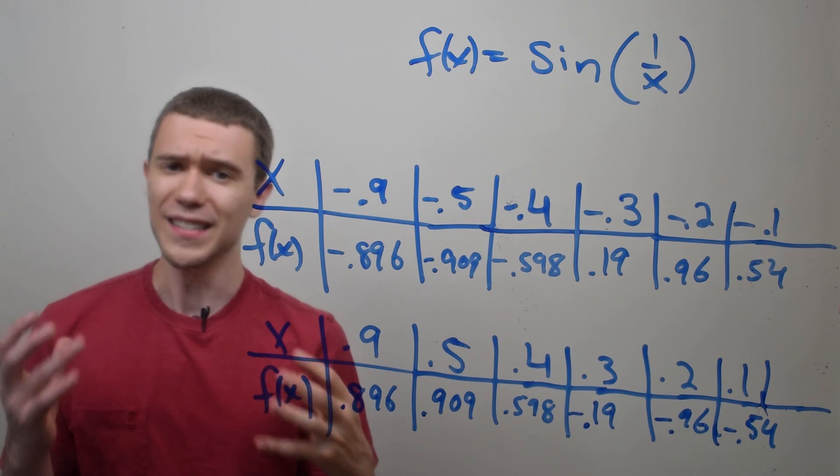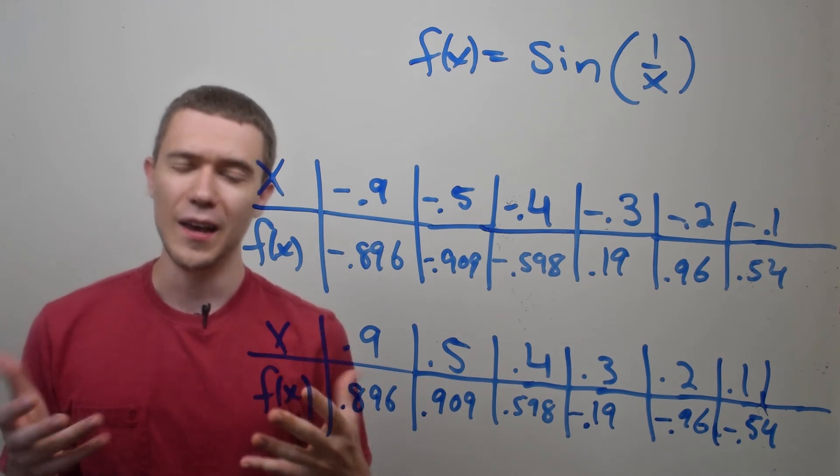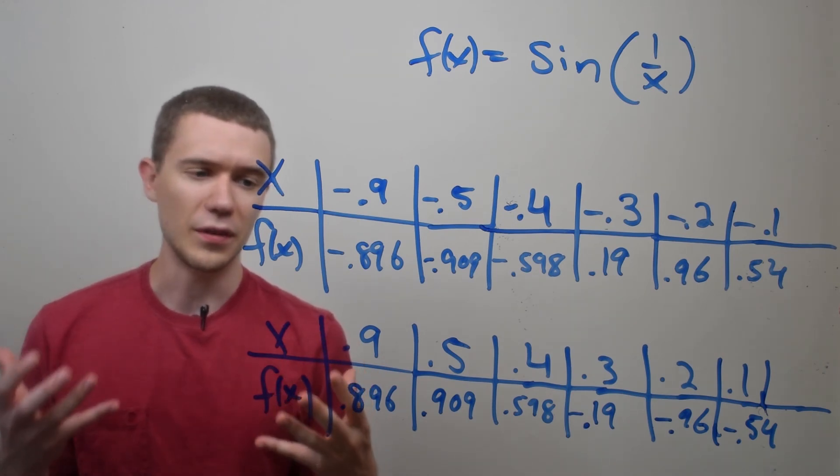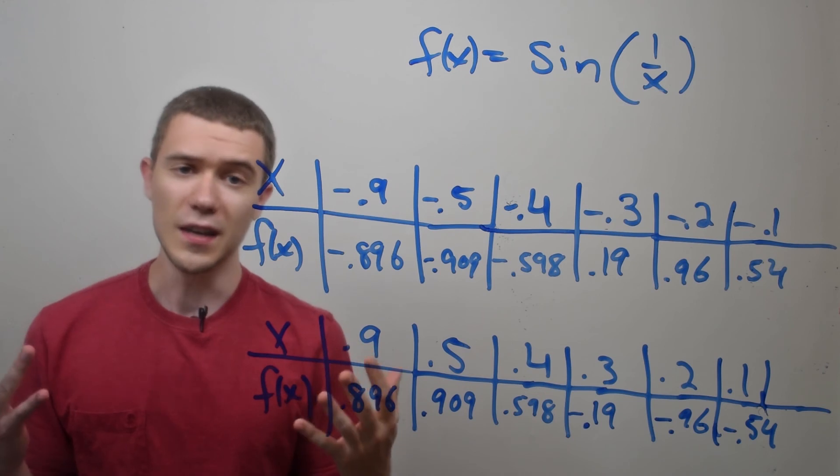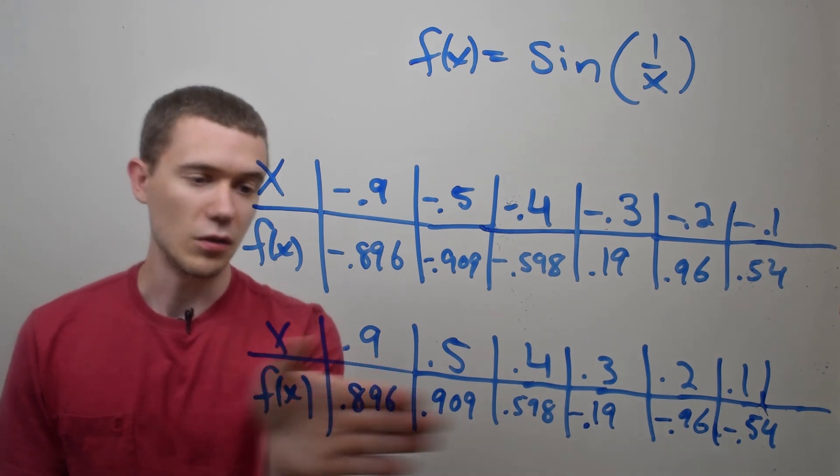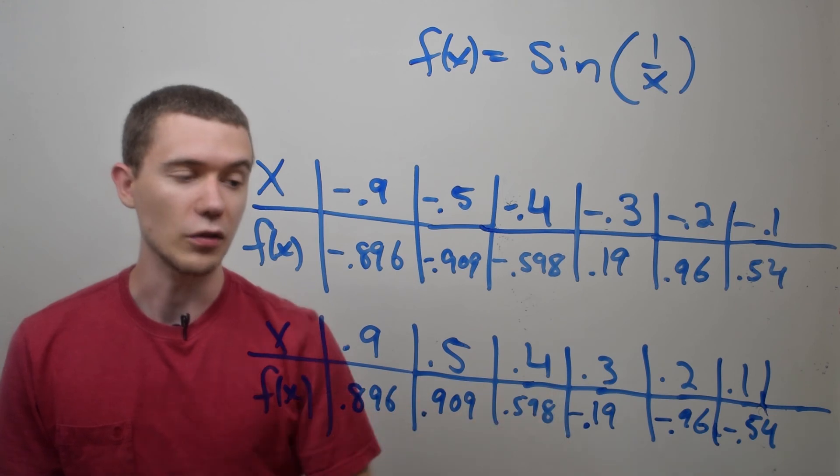In fact, the limit from the left and the right just doesn't exist because the values, and you can see it's the exact same from the right. If I start plugging in values closer to 0 going from the right side, my values start to increase and then decrease and then start to increase again.